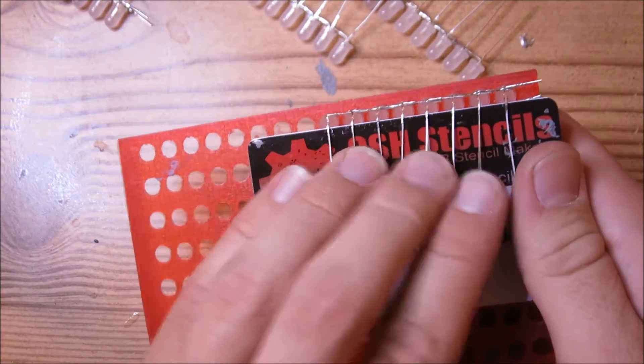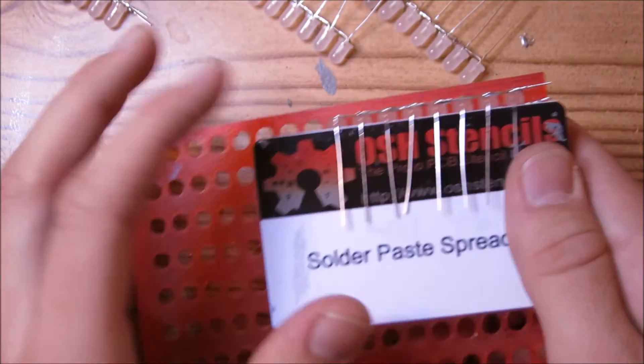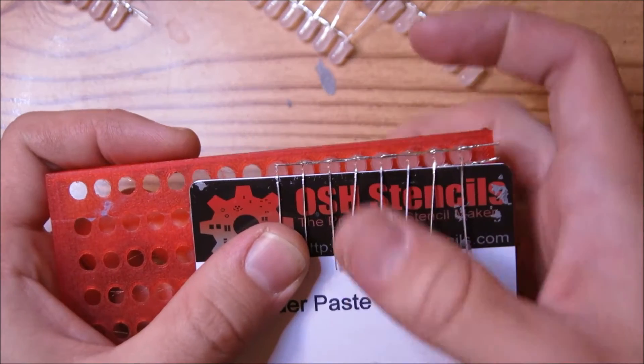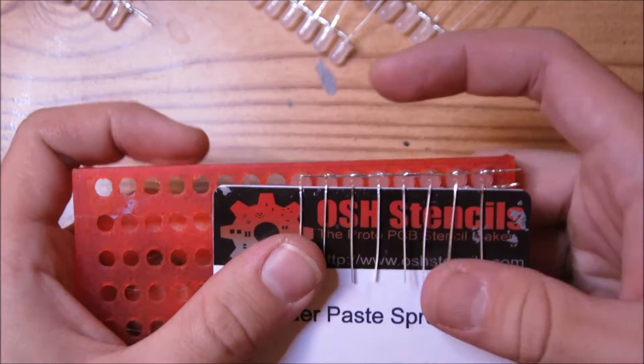And then don't worry if they're a little bit crooked, that's okay, you could straighten that out later. So you have something like this, you have these two pins pointing to the right, and these pins that we have just bent pointing down.